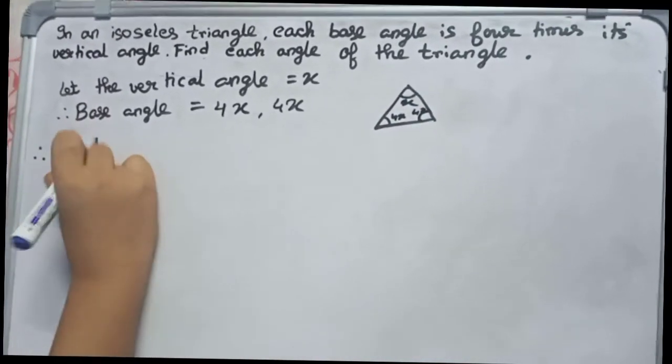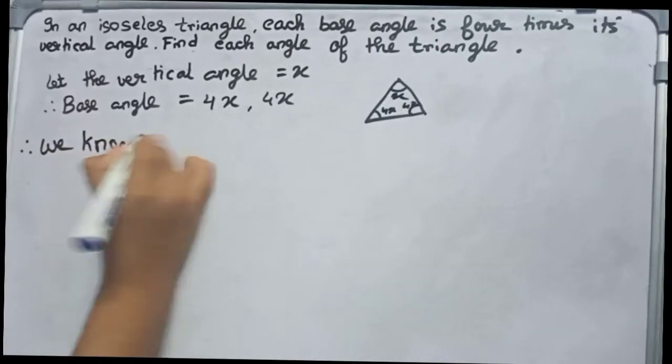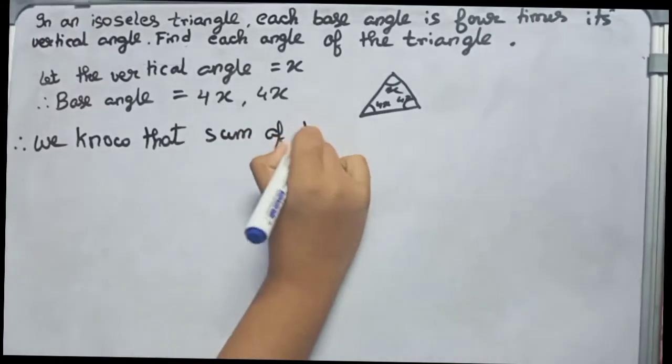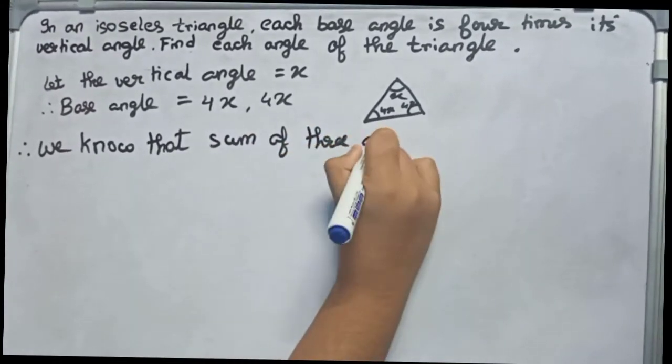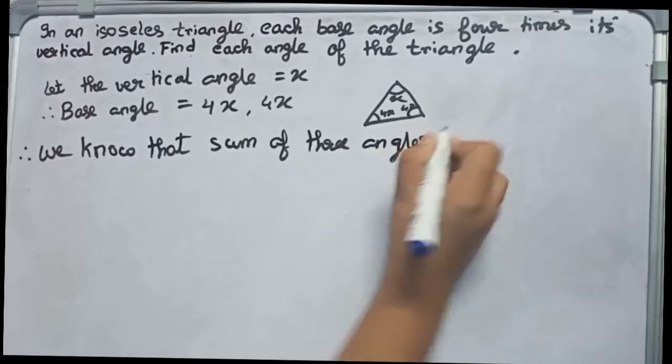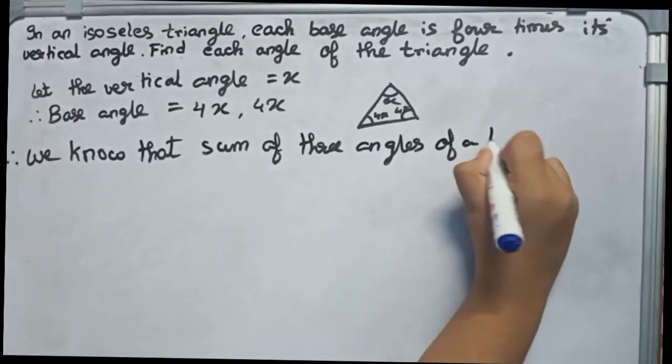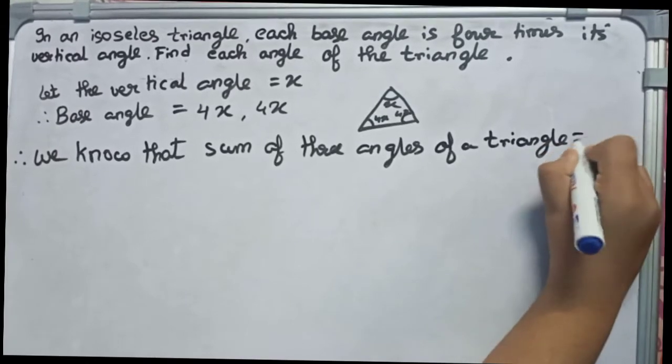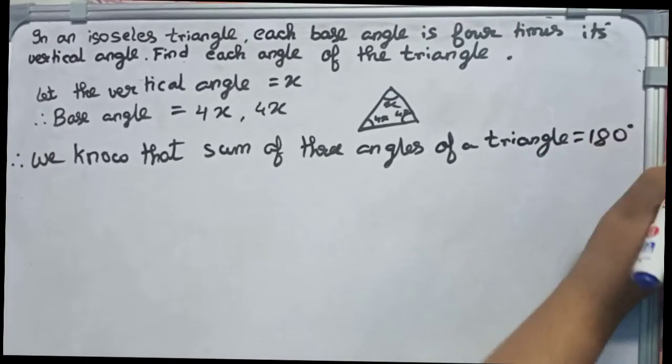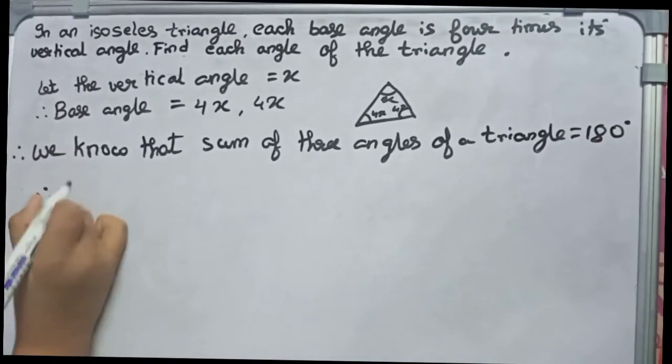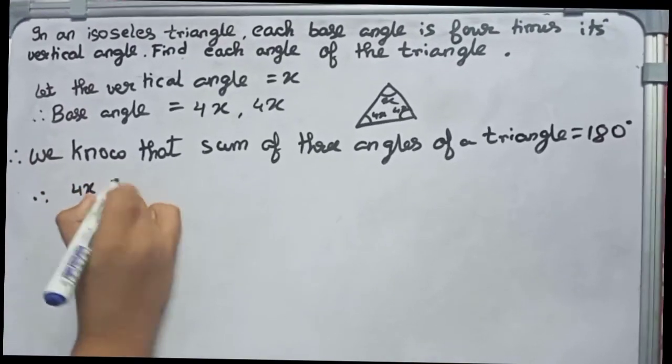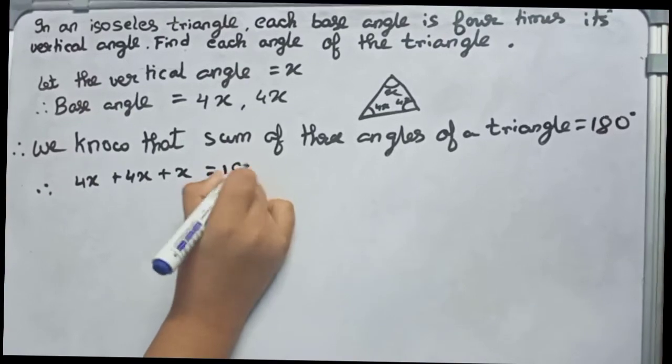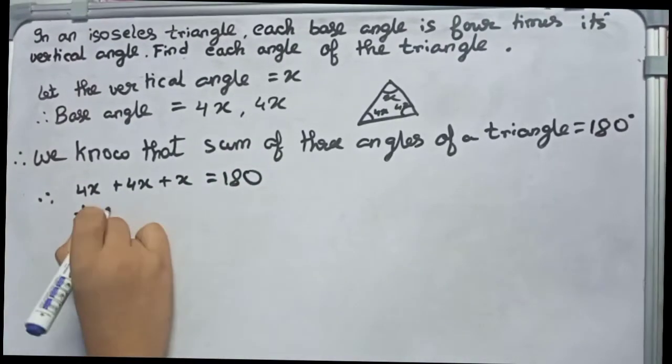We know that the sum of three angles of a triangle equals 180 degrees. So therefore, we write 4x plus 4x plus x equals 180, or 9x equals 180.